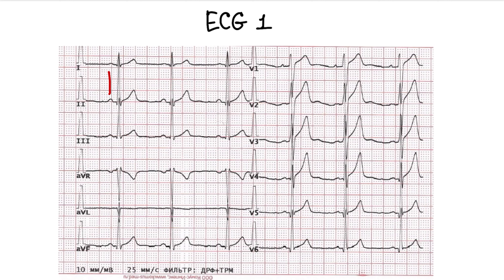Here it is. It's positive at lead 2 and negative at lead AVR, consistent within the same lead, and precedes the QRS complex. The QRS complex is narrow, not widened or deformed. The rhythm is irregular. So, this is a sinus rhythm.